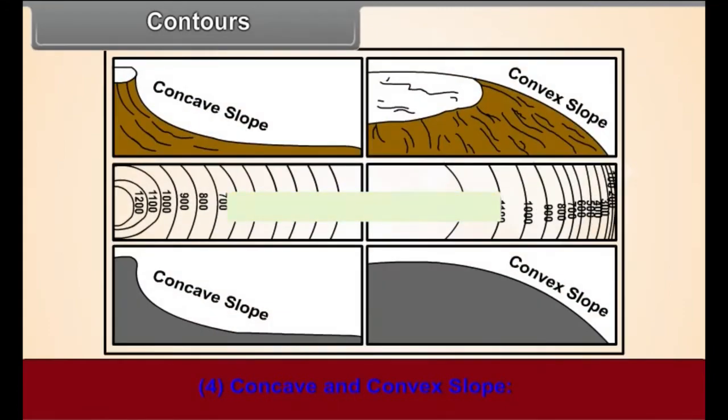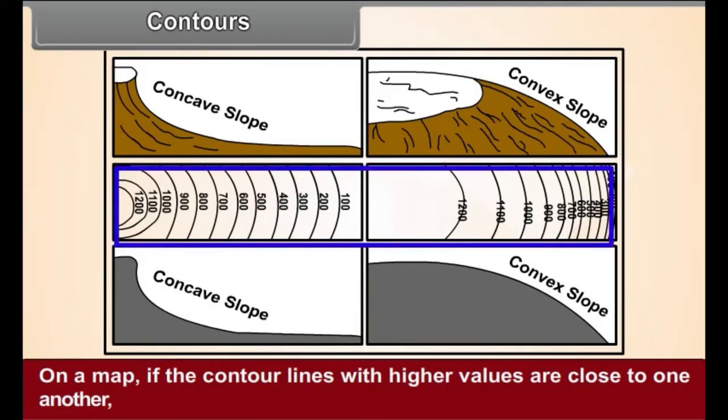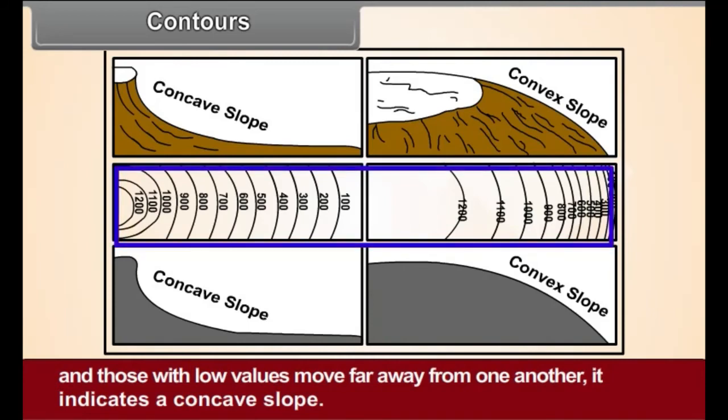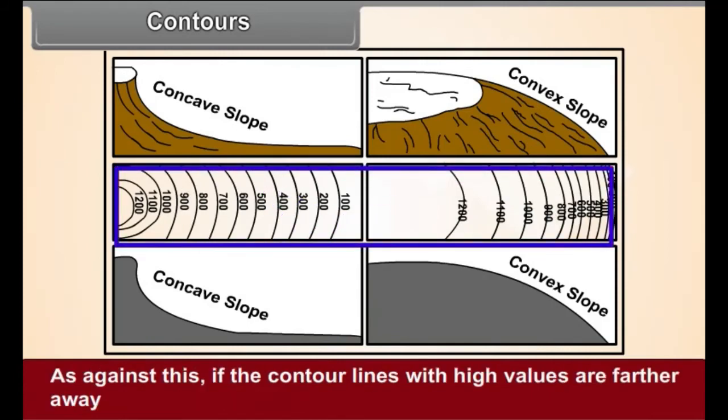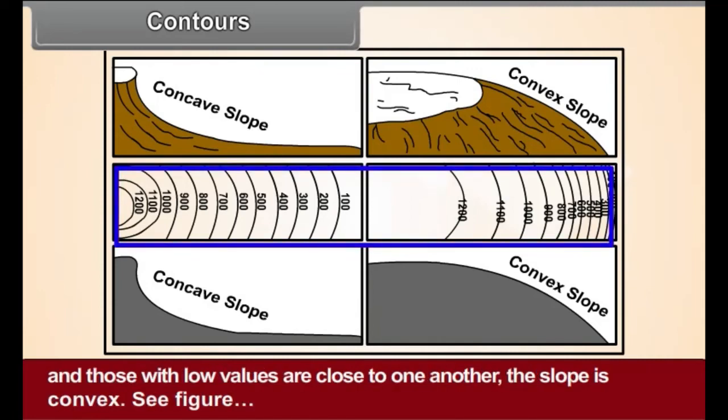4. Concave and convex slope. On a map, if the contour lines with higher values are close to one another, and those with low values move far away from one another, it indicates a concave slope. As against this, if the contour lines with high values are farther away, and those with low values are close to one another, the slope is convex.